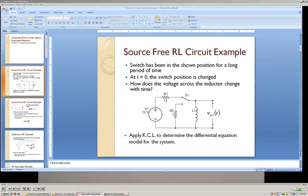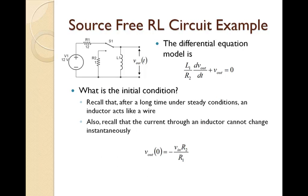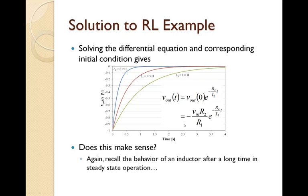Looking back at the notes, we go through the differential equation model and establish it. We establish the initial conditions by recalling that under steady state conditions the inductor acts like a wire and that the current through that inductor cannot change instantaneously. We established our differential equation with our initial conditions and this is what we came up with when we solved that differential equation. What's plotted are different cases with different inductor values. We see that they start at some initial value and all slowly and steadily approach zero.